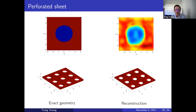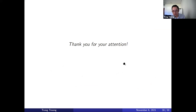The third example is aligned bars — this object is infinitely long in the x1 direction — and the method was also able to reconstruct this case. Finally, we have the perforated sheet, which is the example shown at the very beginning of the talk. This is the hardest case, but we can see that the method was able to reconstruct the round holes of the perforated sheet very well. That wraps up my talk — thank you everyone for your attention and for all the questions.